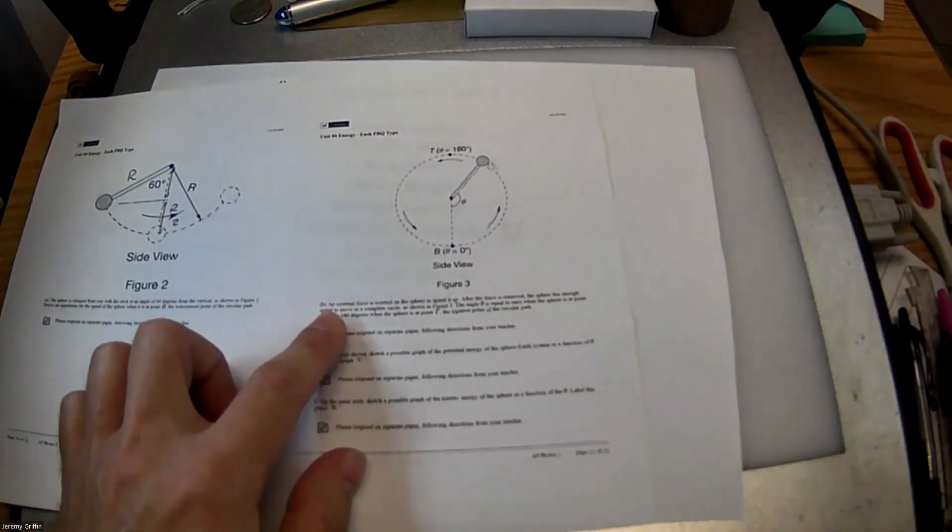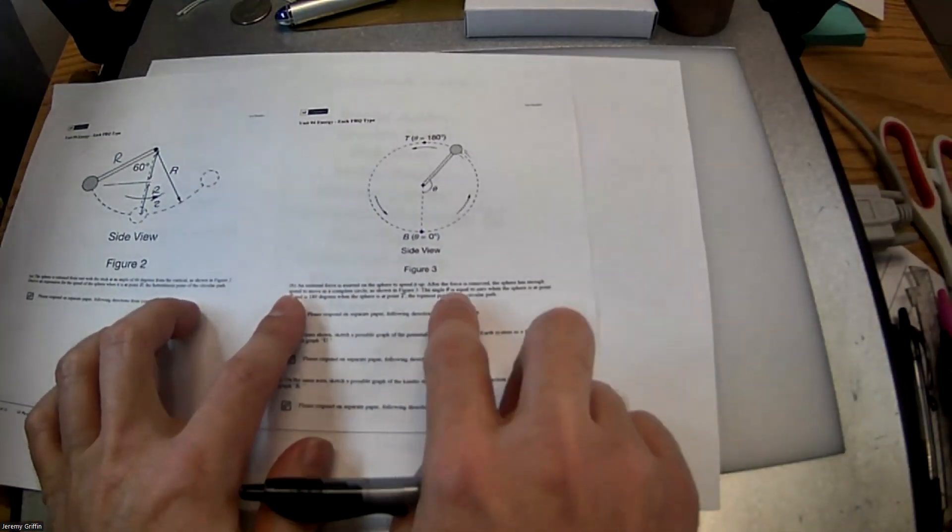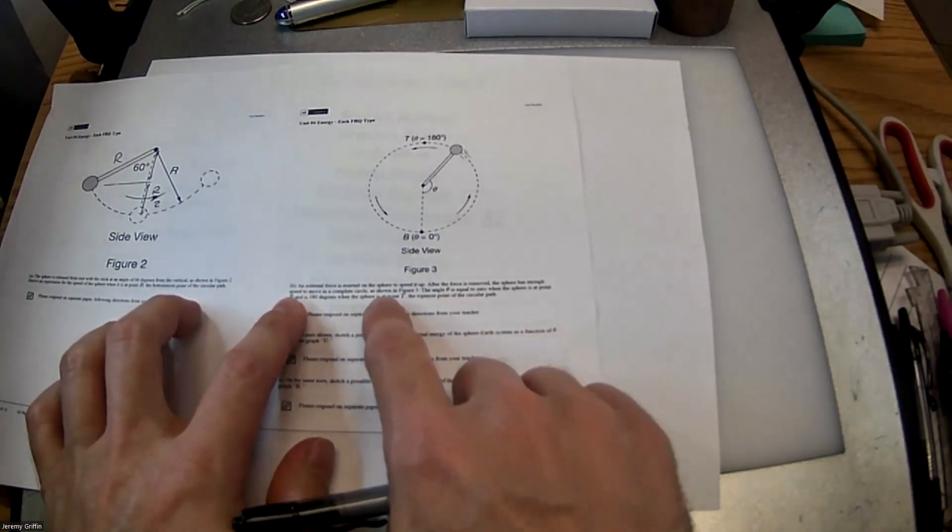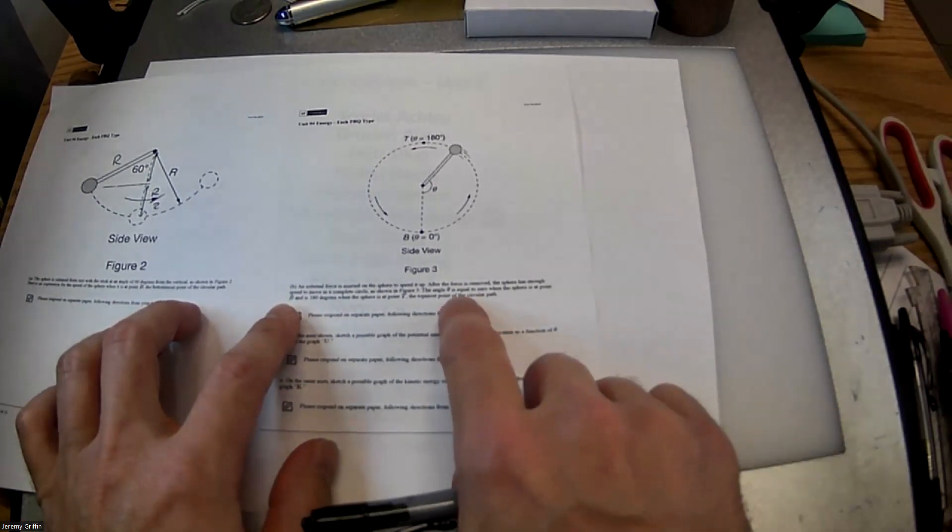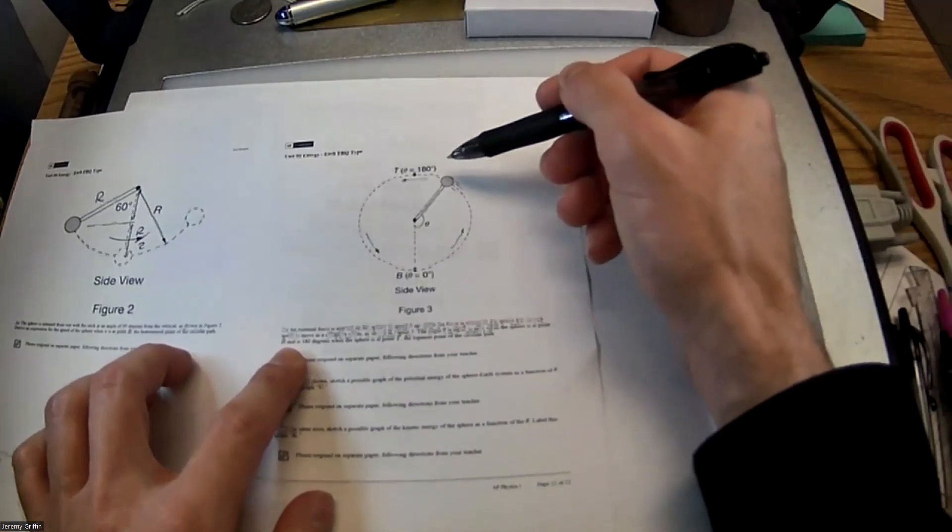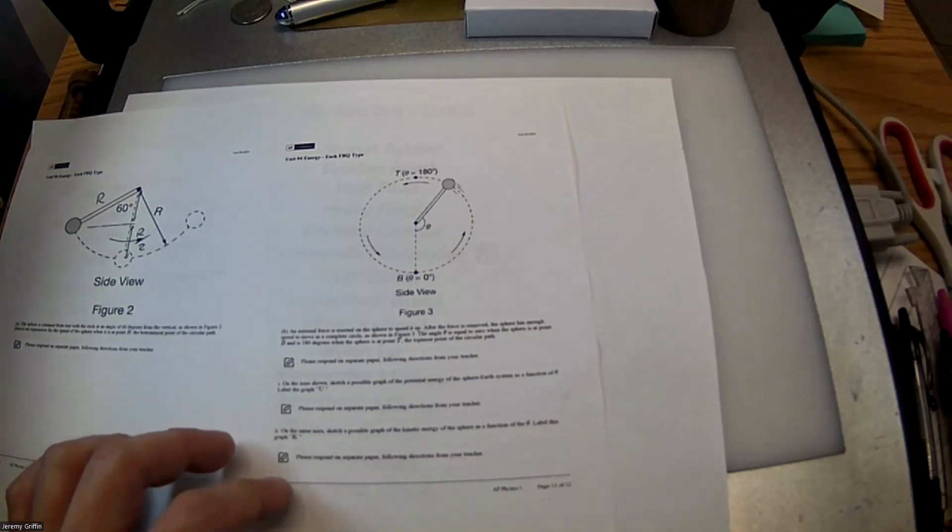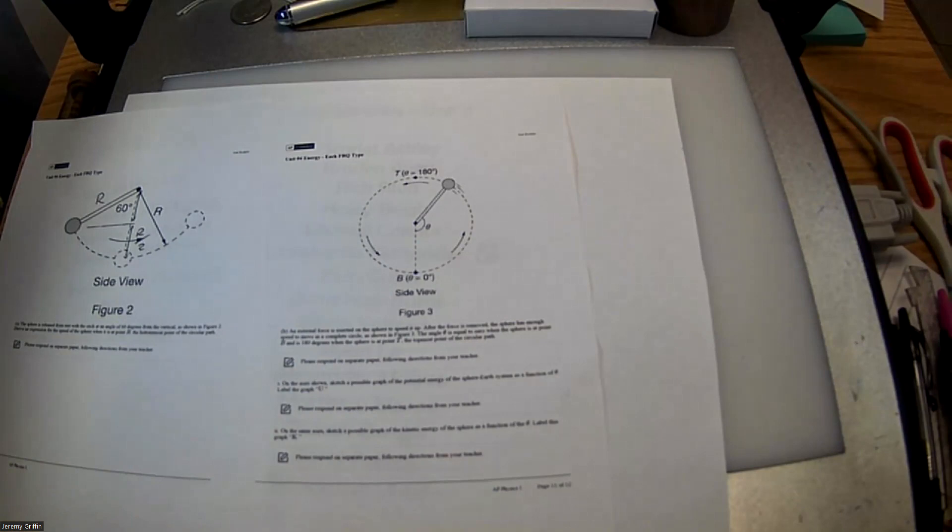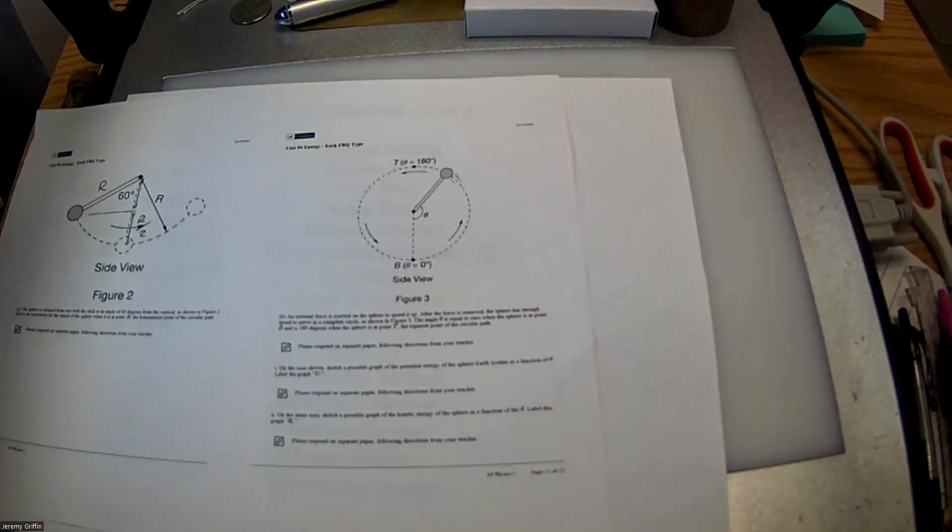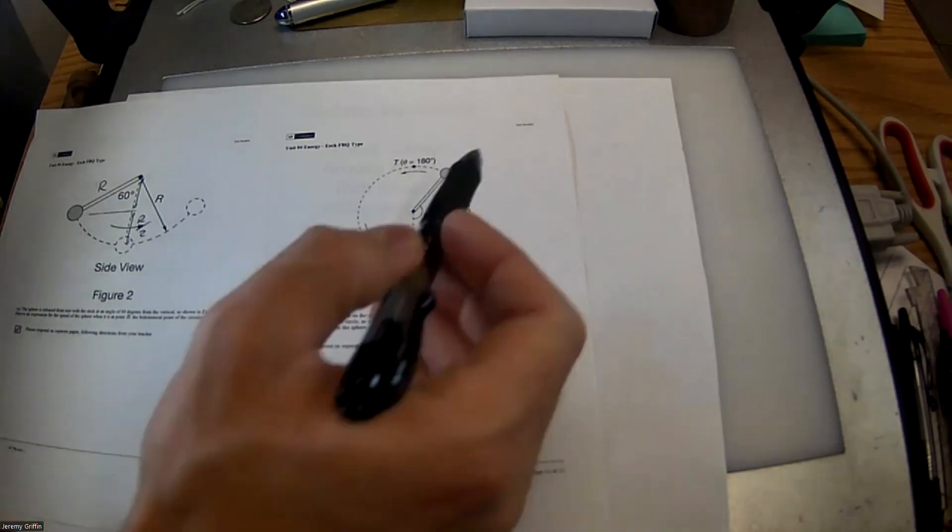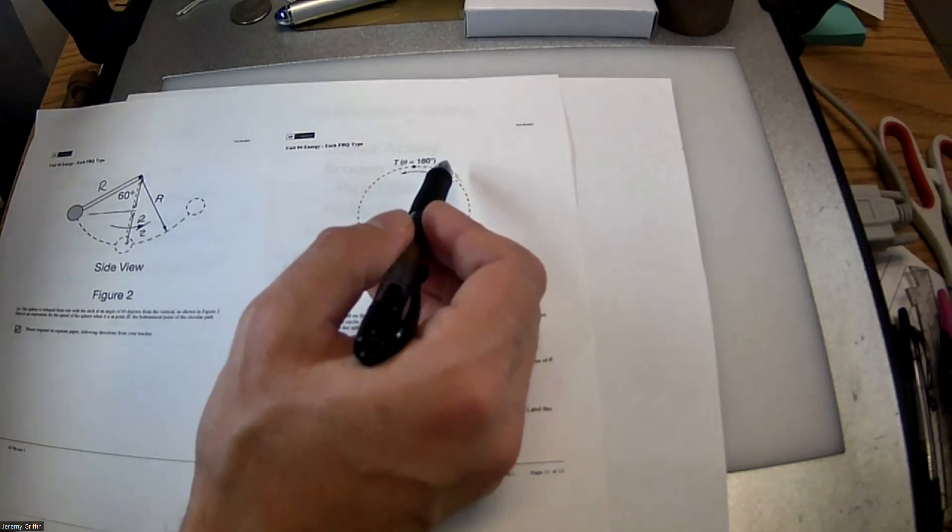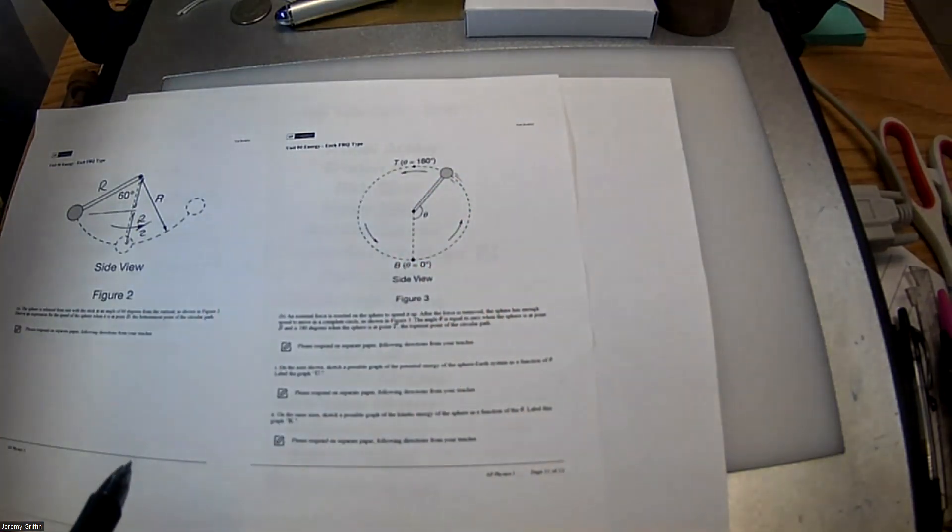Part B. An external force is exerted on the sphere to speed it up. After the force is removed, the sphere has enough speed to move in a complete circle, as shown in figure 3. The angle theta equals 0 at the sphere at point B and 180 degrees at the top, point T. I think the reason they gave a stick instead of a string is because the stick is rigid, so it can go around. The minimum speed should be approaching 0 meters per second at the top, versus if they had a string. You guys know the minimum speed would be square root of gr. But for a stick, it's got some rigidity.